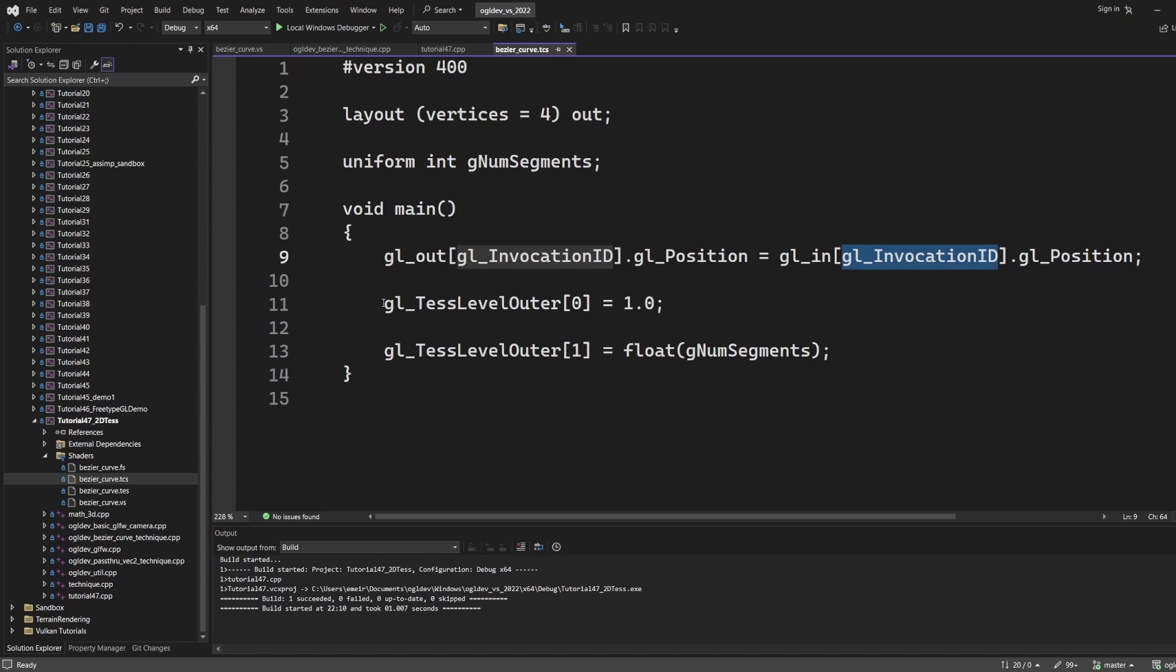Next comes the per-patch part. We have two tessellation levels that we can set. The first one is set to 1 because we want a single output line and the second is the number of segments in that line. Notice how the uniform variable is cast from an integer to a floating point.